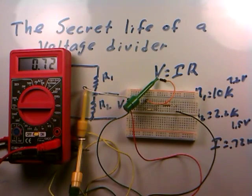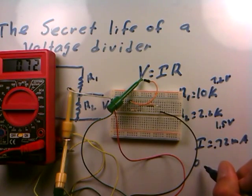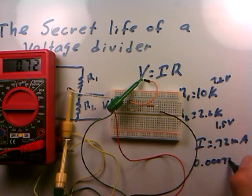That's 0.72 thousandths of an amp. If I wanted to write it without the milli, it would be 0.00072 amps. It's a small amount of current, but a current nonetheless.